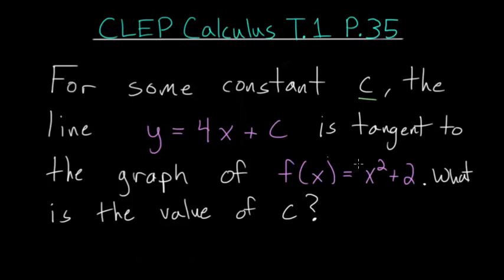So essentially we have this function where this line is tangent to it at some point, and what we can recall about the derivative of a function is that the derivative is essentially an equation that gives us the slope of the tangent line at any value of x. So if we were to find the derivative of this function, we could set that equal to the slope of this line, which is 4 since that's the coefficient on x, and solve for which value of x we end up with this slope of 4.